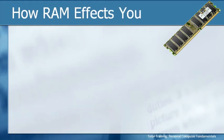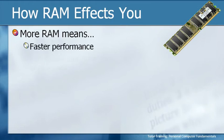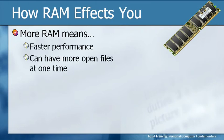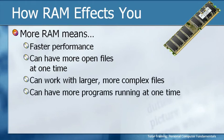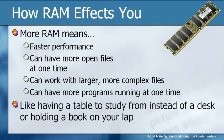But how does this actually affect you and the way you work on your computer? More RAM means several things: faster performance, that you can have more open files at one time, that you can work with larger and more complex files, and that you can have more programs running at one time. You get faster performance because instead of having to feed the computer one instruction at a time, the RAM can hold multiple instructions, so the computer can simply access it faster. Likewise, that's why you can have more than one file open at a time, and they can be very complex files, because that can be held in temporary memory.